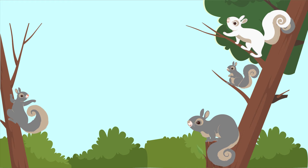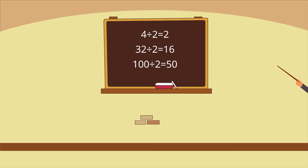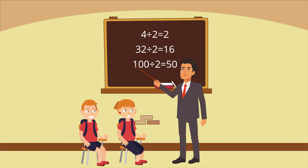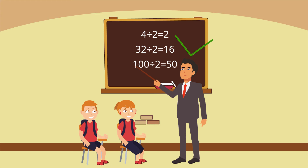For example, not all squirrels are grey because there are albino squirrels. Some universal statements, especially ones about abstract concepts like math, do not have counter-examples. All even numbers are divisible by two, and there is no even number that one can appeal to as an exception to this rule.